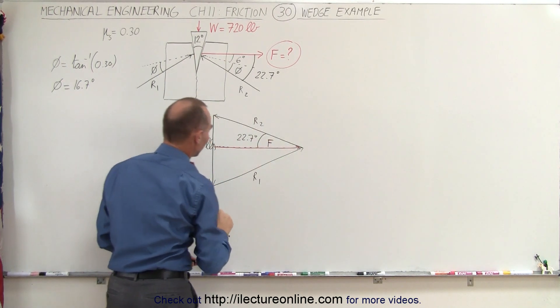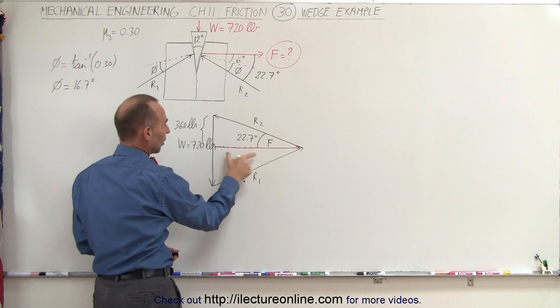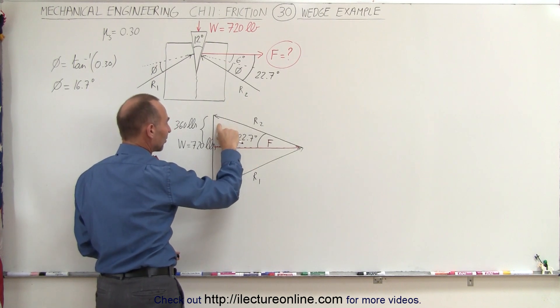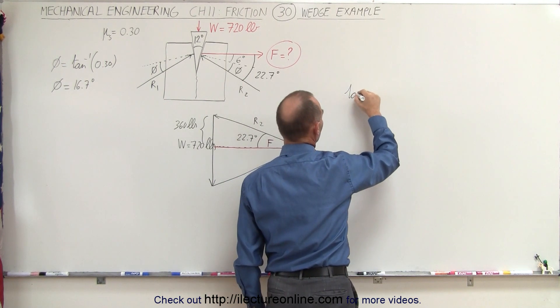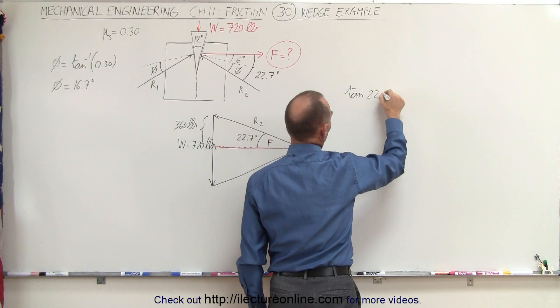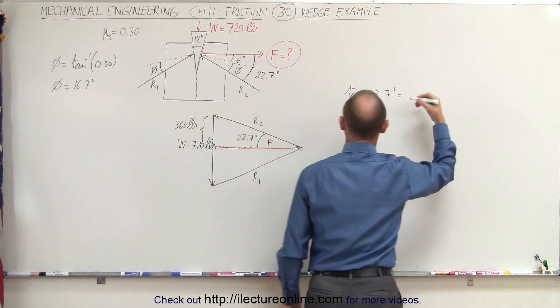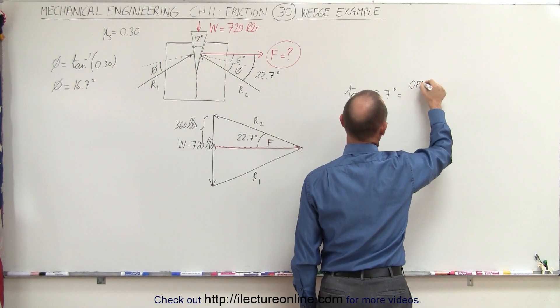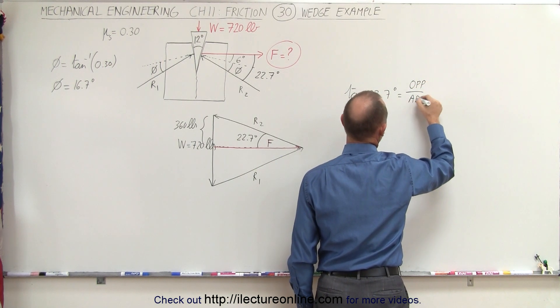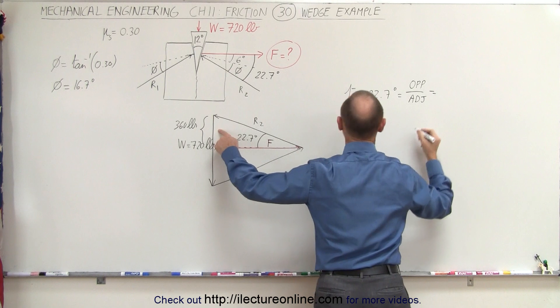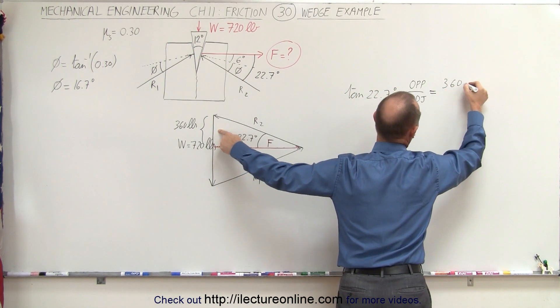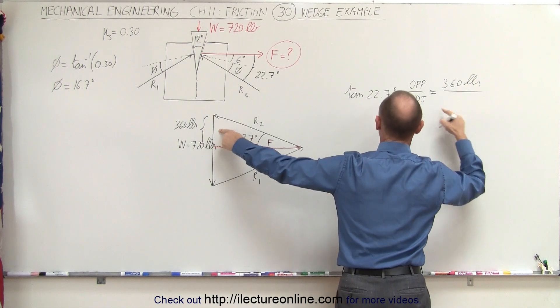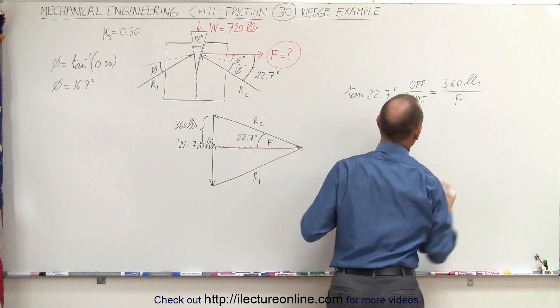With this angle of 22.7 degrees, we can find F because we have a relationship between the adjacent side, the opposite side, and the angle. The tangent of 22.7 degrees equals the opposite side (360 pounds) divided by the adjacent side F, which is what we're looking for.